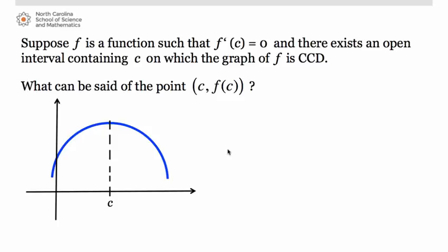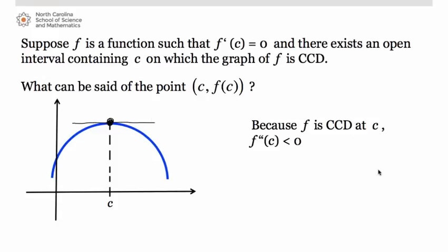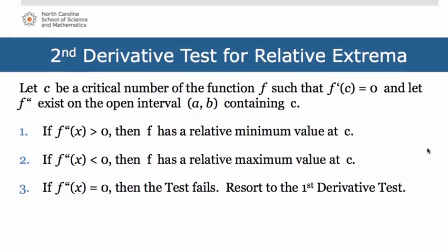Now let's look at the other case. Suppose f is a function such that f prime of C equals 0 and there exists an open interval containing C on which the graph of f is concave down. Again, because f prime of C equals 0, at point C we have a horizontal tangent line. Since the function at that point is concave down, the second derivative at that point is less than 0, and we can tell from the graph that we have a relative maximum at C.